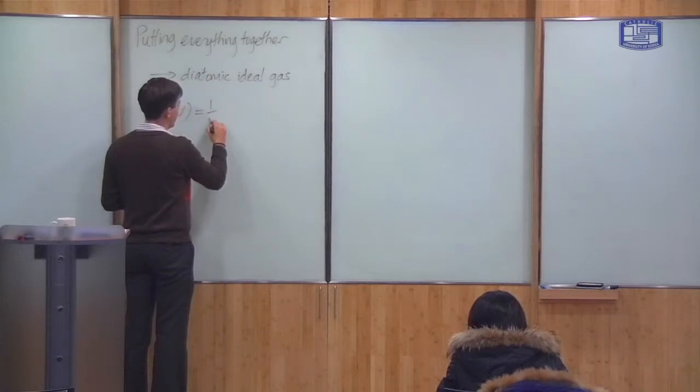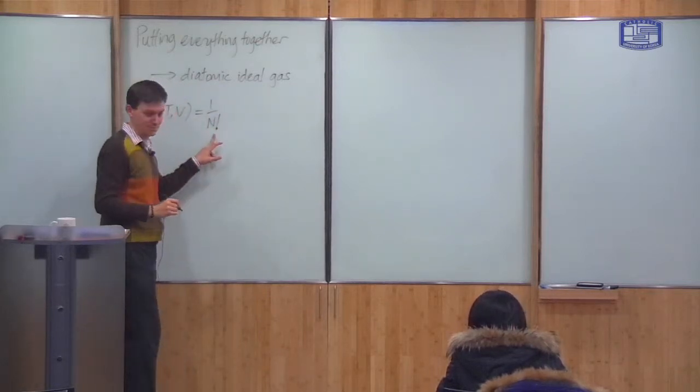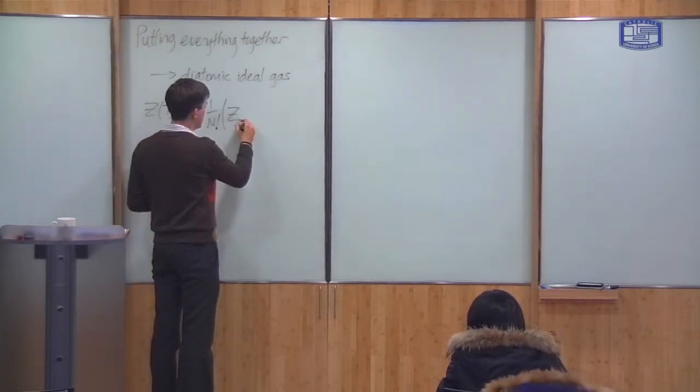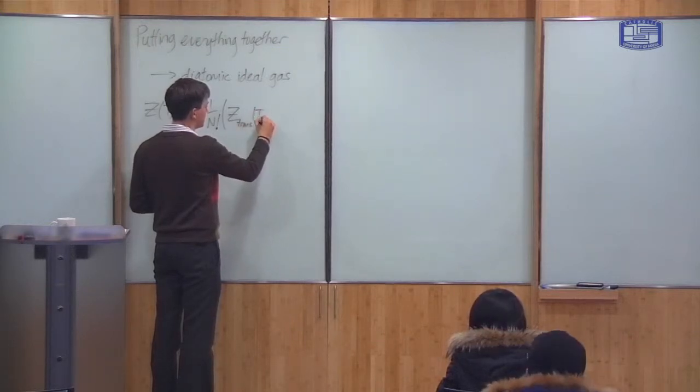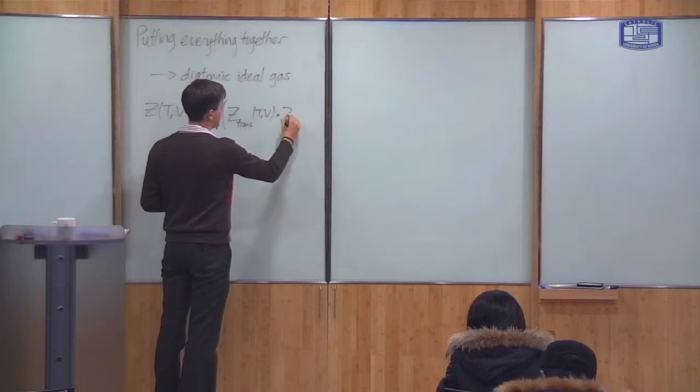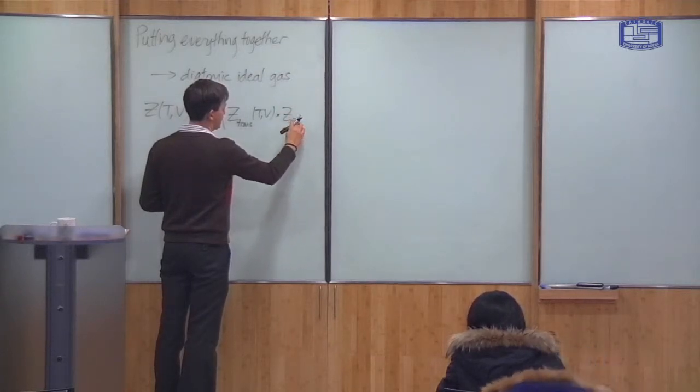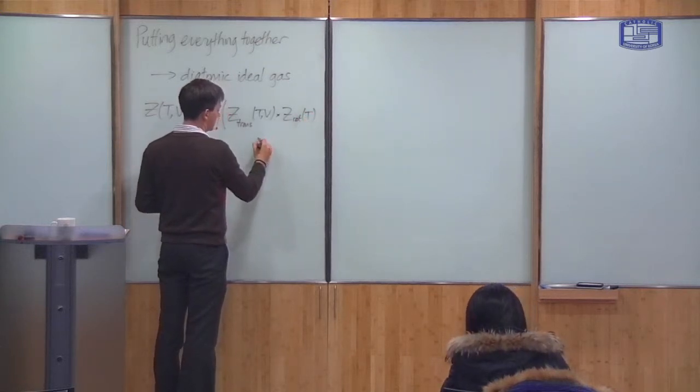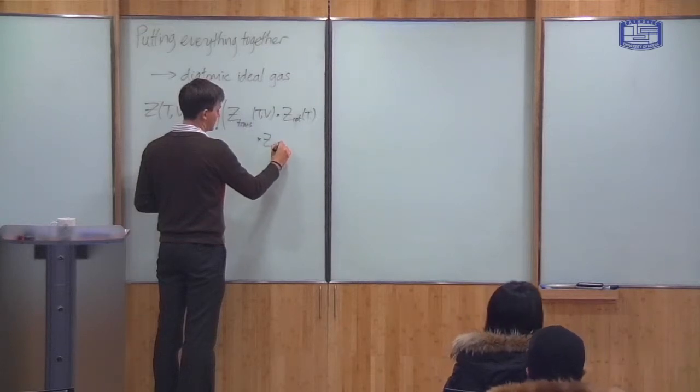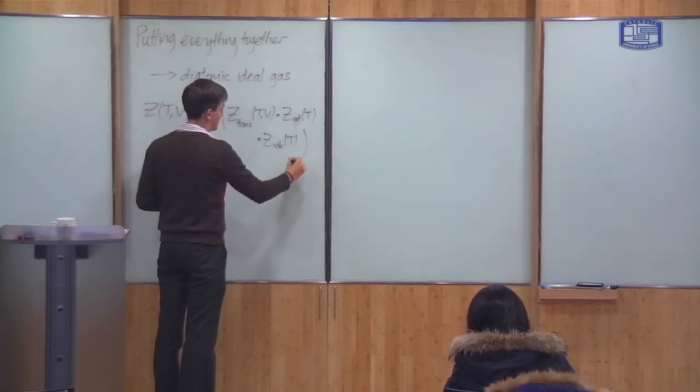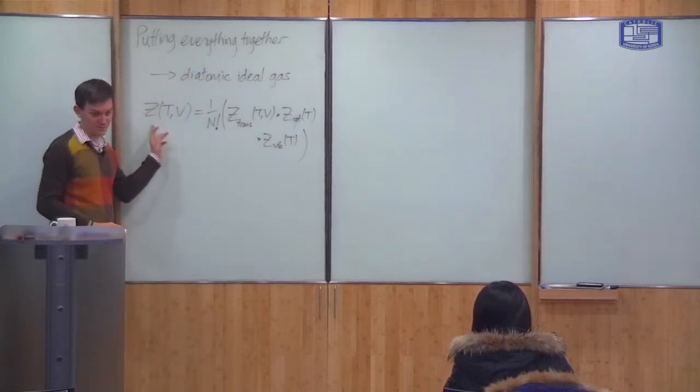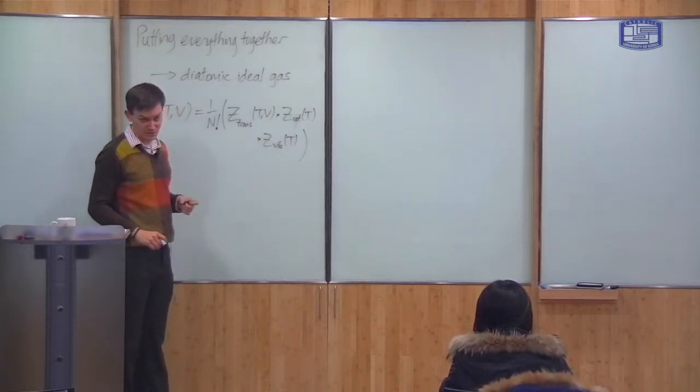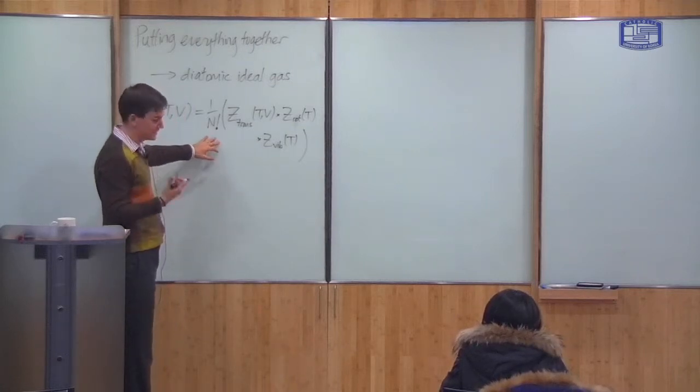The total partition function z is a function of the temperature and volume of the gas. This is 1 over N factorial, which comes from the fact that the particles are indistinguishable, times the product of the translational part, times the rotational part, times the vibrational part. The total partition function is a product of the partition functions for each part divided by N factorial due to the fact that the particles are indistinguishable.